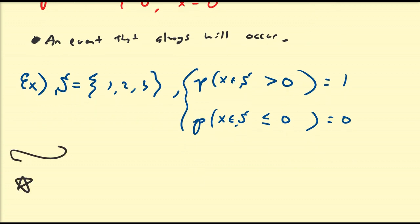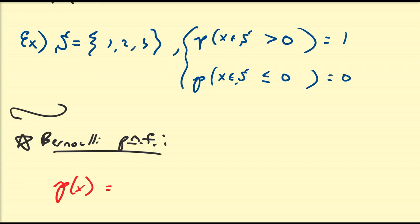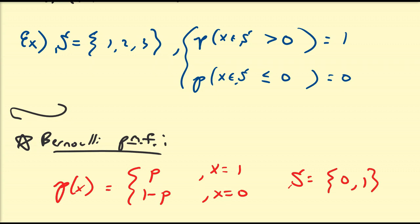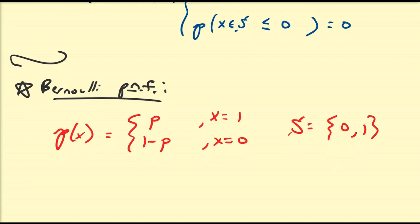Let's move to a more common case, called the Bernoulli PMF. The Bernoulli PMF is defined as: the probability that X equals 1 is defined to be lowercase p, and the probability that X equals 0 is 1 minus p. The support of this function is {0, 1}, where p is the probability of the event of interest occurring, and 1 minus p is the probability of its complement. The degenerate PMF is a special scenario of the Bernoulli PMF for which it is possible that our event of interest could not occur.